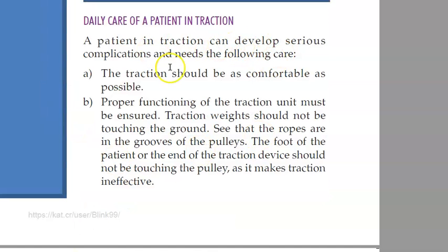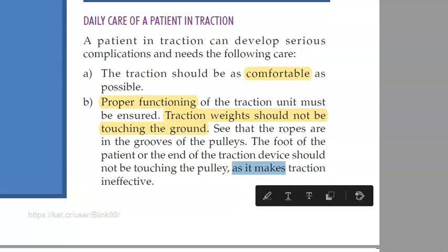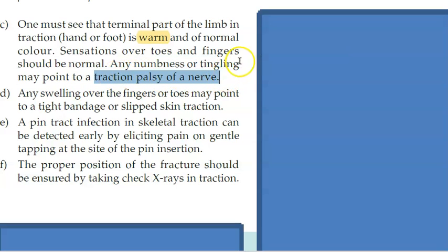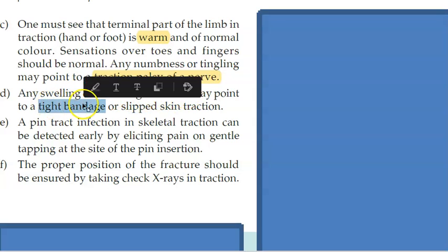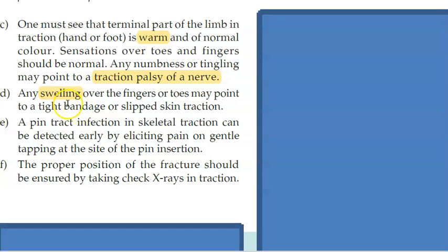How do you care for a traction? Basically it should be comfortable for the patient and it should function properly, because if it is too bad it will only cause deformity. The weights should not touch the ground. The pulleys and ropes should be proper. The foot of the patient or the end of the traction device should not be touching the pulley, otherwise it becomes ineffective. You should check whether the terminal part of the limb is warm — if it is cold, blood supply is not sufficient. Any numbness or tingling may point to traction palsy of a nerve. Any swelling over the fingers or toes may indicate a tight bandage or a slipped skin traction.